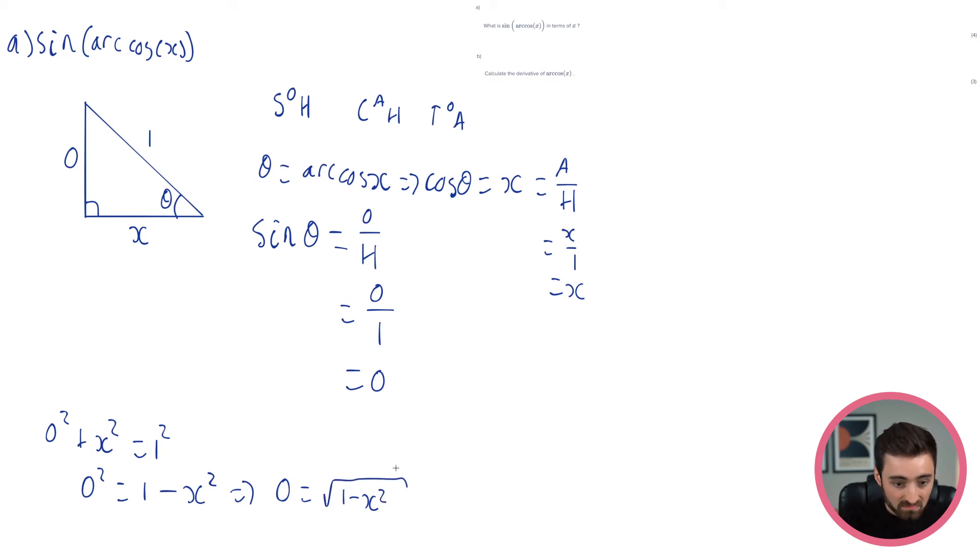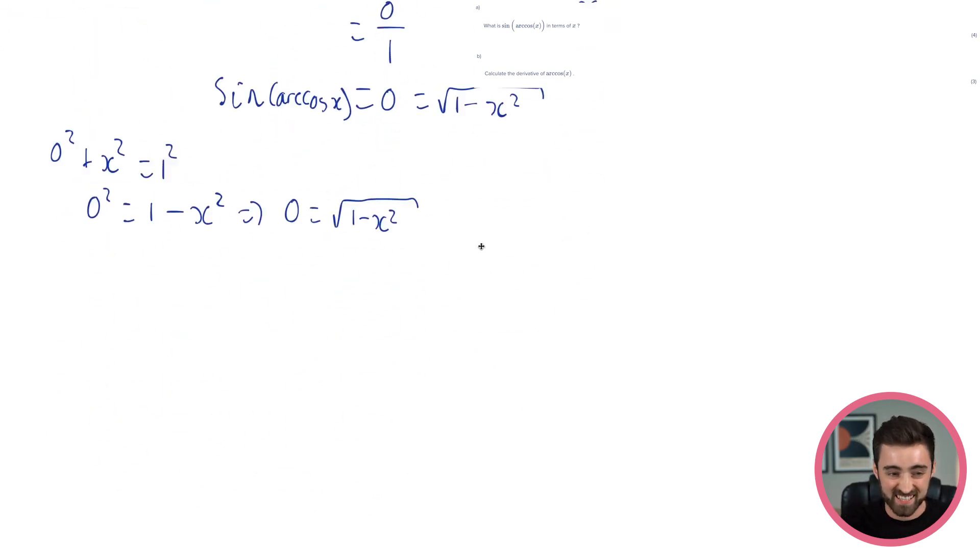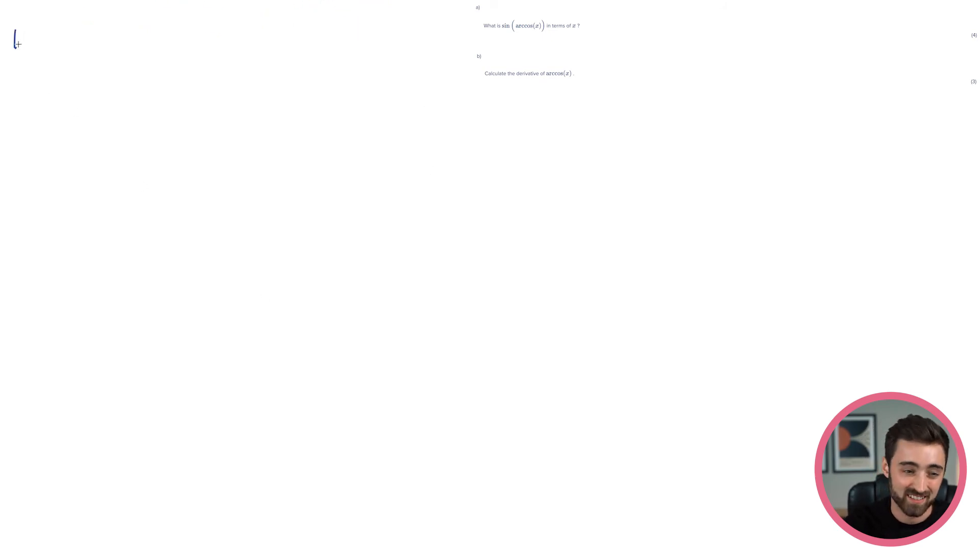So this is my answer, right? Because if you look at it, sine theta, which happens to be sine of arc cos of x, is equal to my opposite here, which is equal to the square root of 1 minus x squared. Make sure you remember that because it's a bit tough. I know it's a bit tough, and it's weird, but it helps.